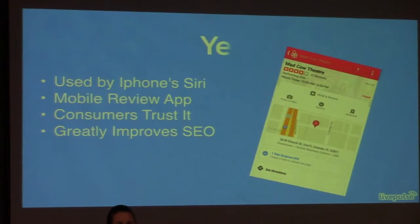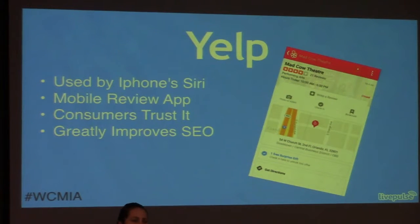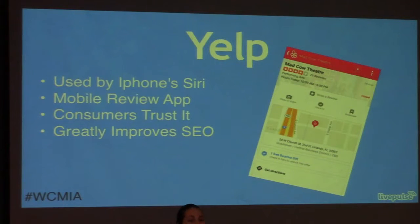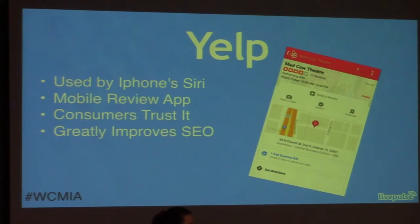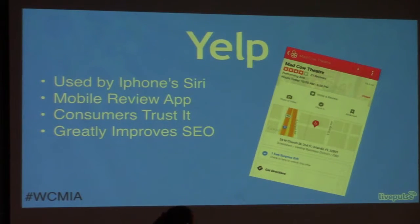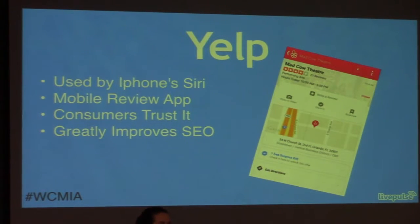The second most important of those four is Yelp. Yelp is important because — how many people in the room have an iPhone? You all use Yelp and don't know it. When you ask Siri to help you find a restaurant or a dry cleaners, that's Yelp — that's where Siri's pulling her data. We want to make sure that we're capitalizing on that. It's also one of the most heavily used review apps on mobile. Consumers trust other consumers more so than they trust any advertisement they'll ever see on TV, so know that is definitely a place you need to pinpoint.